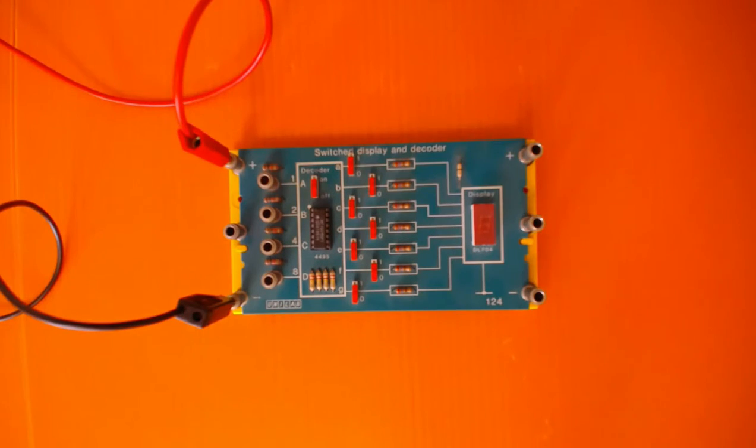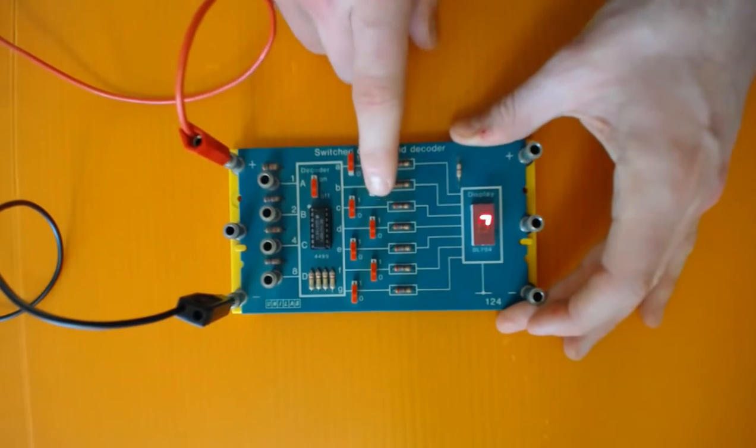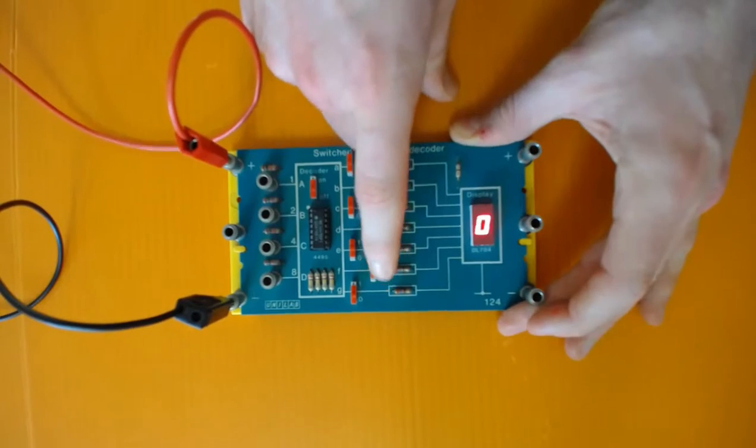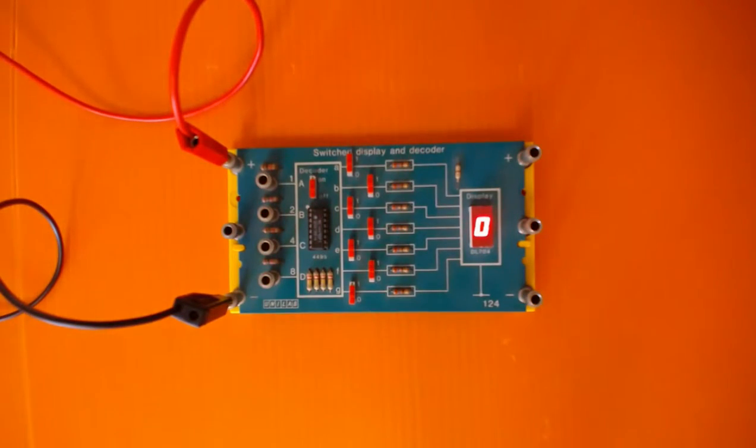So firstly 0, we'll switch on A, B, C, D, E and F and we get 0 on the display.